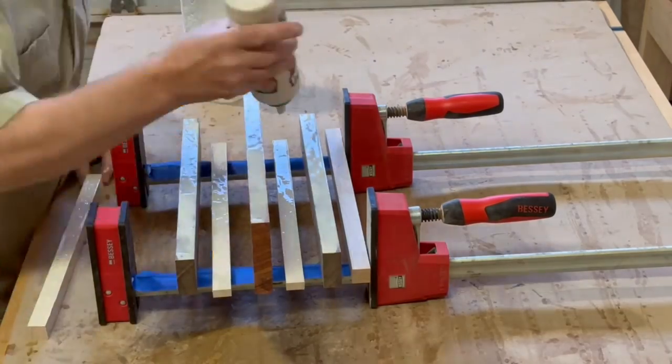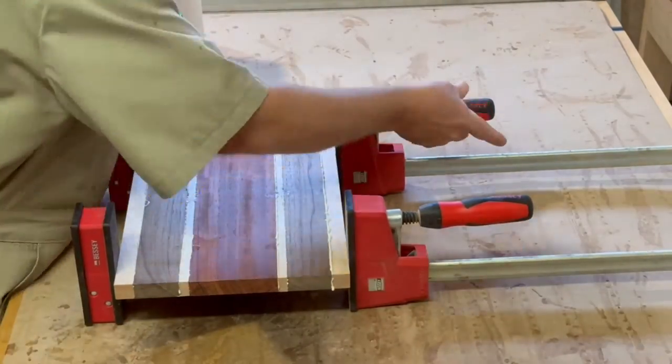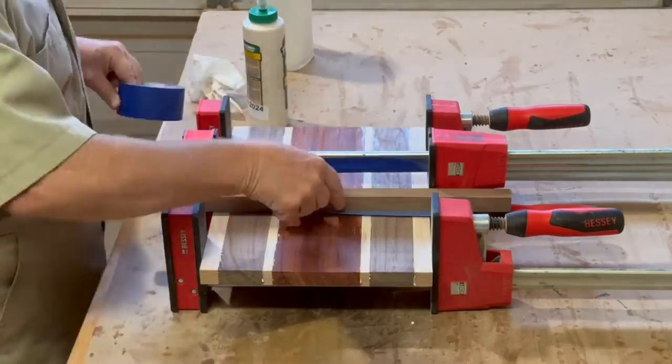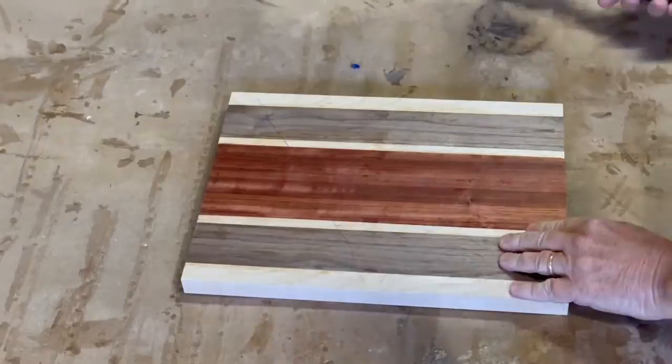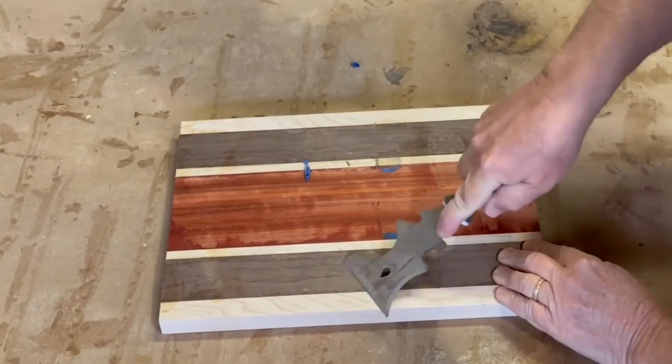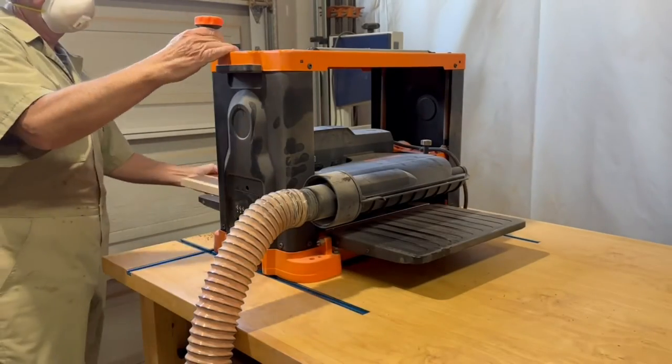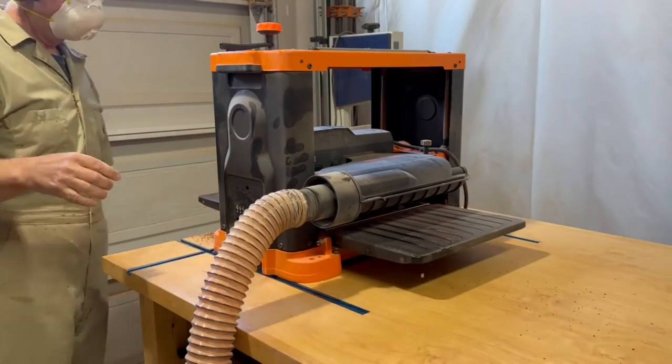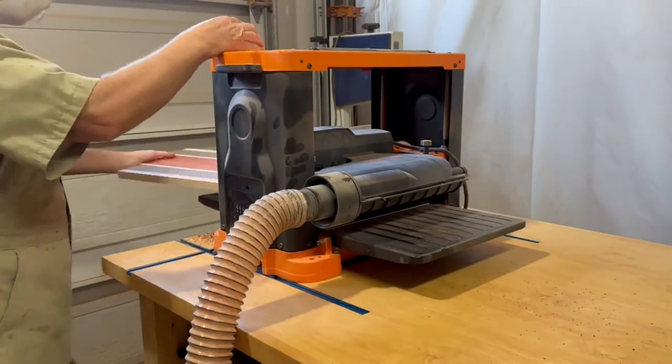I'm using Titebond 3 which is a glue that's waterproof and FDA approved food safe so it seems appropriate for cutting boards like this. When the glue is dry just make sure to remove any remaining chunks of glue before running it through the planer. I cleaned the glue off pretty good when it was still wet so not much to do here. Using the planer to get the faces flat and parallel multiple ultra shallow passes here is important to avoid any tear out of the grain.